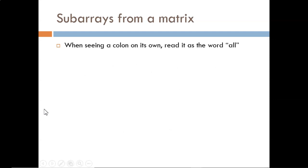When we are dealing with matrices, the same ideas apply, it just becomes a little trickier to read. A technique I'm going to illustrate is crossing out all the rows and columns that aren't requested, thereby leaving us with the selected subarray. One new idea is that when we see a colon on its own in an index, interpret it as the word all.